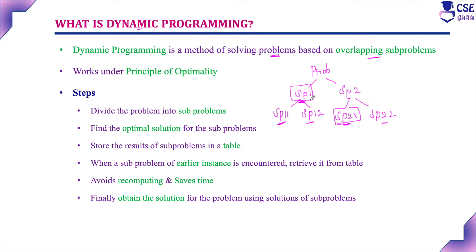This is the concept of overlapping subproblems — whenever we encounter similar subproblems, use the result of the earlier instance instead of recomputing again and again. This is the concept we implement in dynamic programming, and it will save time instead of recomputing for similar subproblems. Dynamic programming solves problems based on overlapping subproblems.